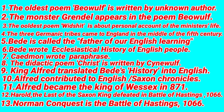Question 11: Alfred became the King of Wessex in 871 AD. Question 12: Harold, the last of the Saxon kings, was defeated in the Battle of Hastings, which occurred in 1066 — that is the Norman Conquest.